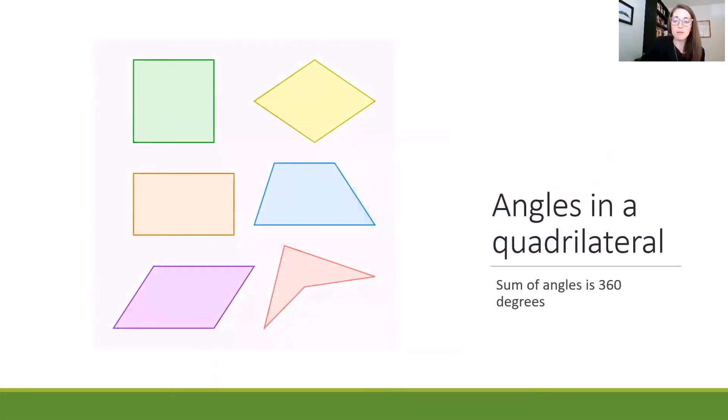In a quadrilateral, the sum of the angles is 360 degrees. A quadrilateral is any shape that has four connected sides. So you can see here, there are many examples, including the square and the rectangle and the parallelogram, but there's also one that's more of a diamond shape, a trapezoid shape, and just kind of a general quadrilateral shape with four sides, but maybe doesn't have a typical name.